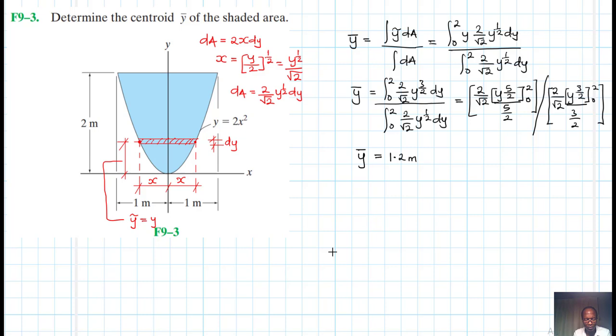So we have 2 to the power 2.5 divided by 2.5, then divided by 2 to the power 1.5, then divided by 1.5.